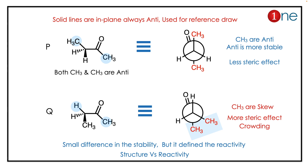If you look at it, the backside carbon is a carbonyl — so no issues there. But there is a methyl group issue: the methyl is very sterically hindered, so the methyl wants to be away from there to reduce the steric effect. Therefore, the anti-position, which is P, is more stable when compared to Q.